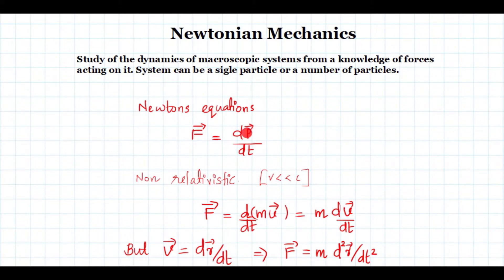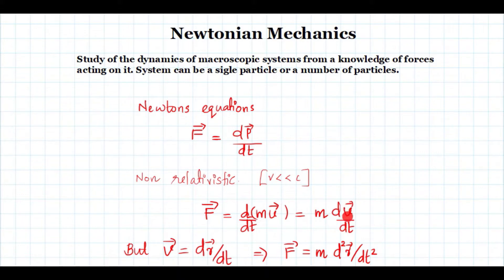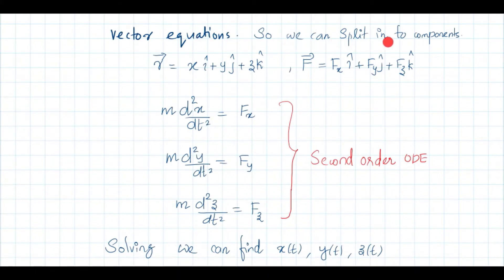If it is a single particle system and a non-relativistic case — meaning the velocity of the particle is very much less than the velocity of light — then I can write Newton's equation as F equals d/dt of mv, where mv is the momentum and v is the velocity. In the non-relativistic case, m can be taken outside, so F equals m times dv/dt. Since v is the derivative of position vector, v equals dr/dt, and therefore force equals m times d²r/dt². So Newton's equations are second order ordinary differential equations. Importantly, force is a vector and position is a vector.